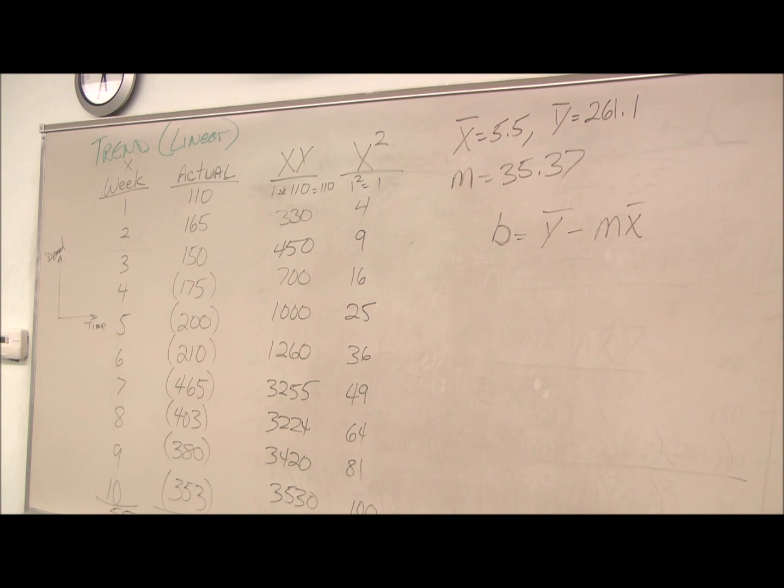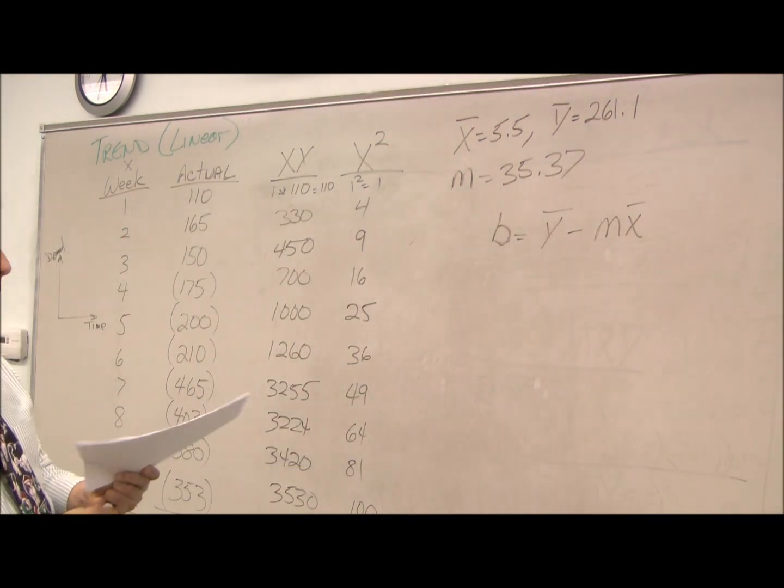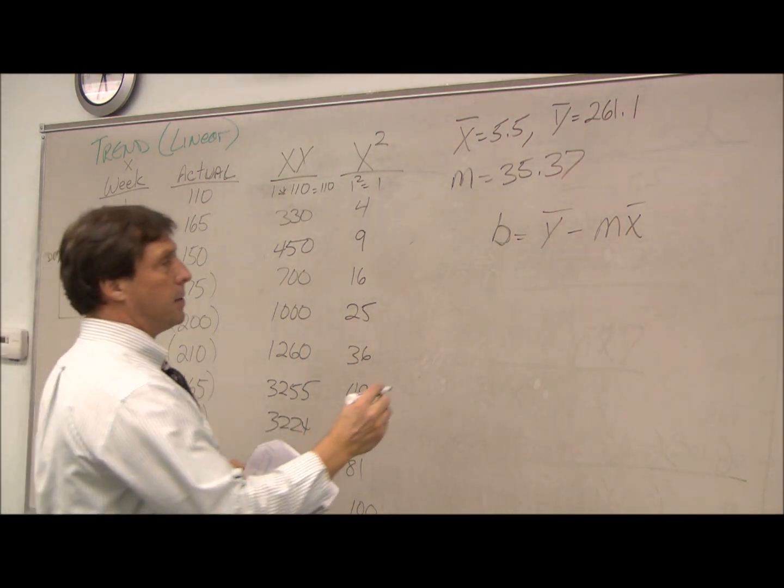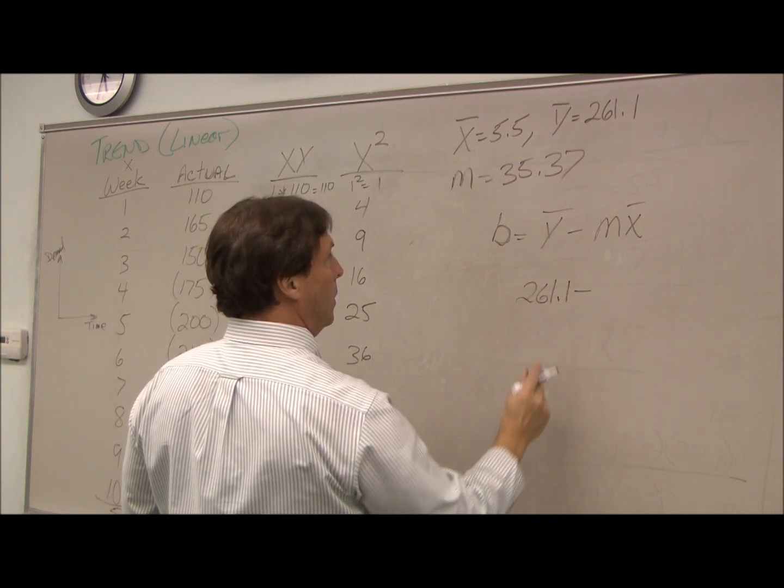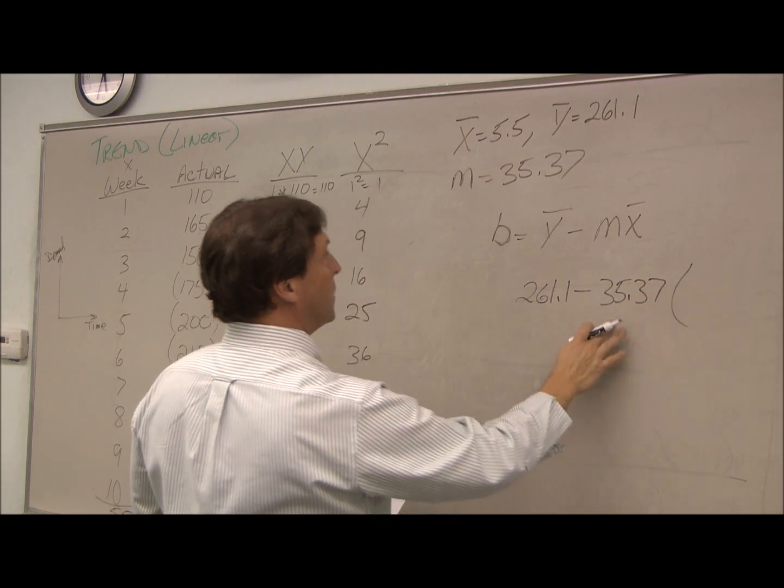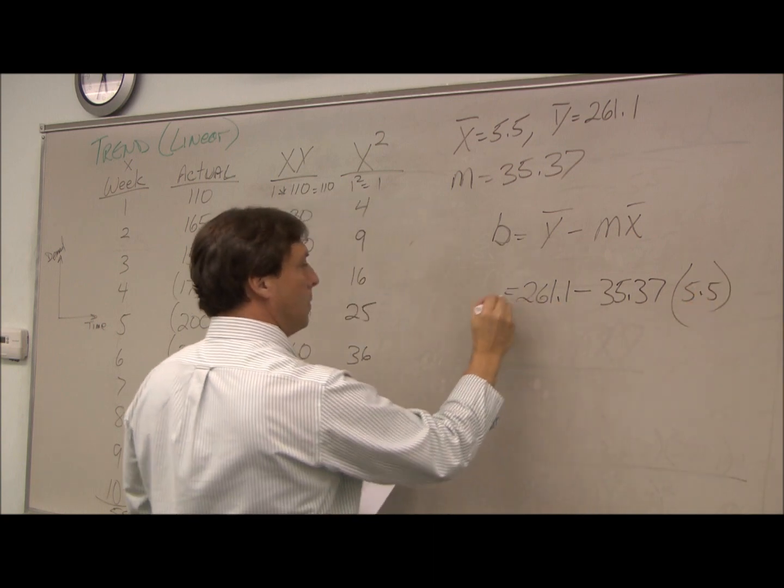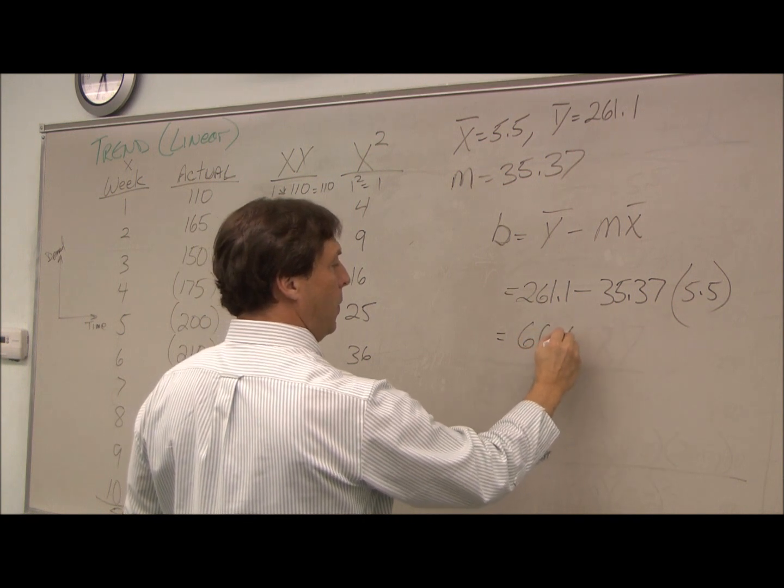All right. So so far, we have our slope. Now we need to know our b. So that's simply we take our y-bar, subtract it from the slope times our x-bar, which comes out to 66.5.